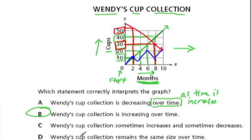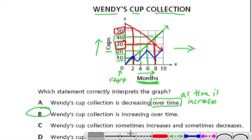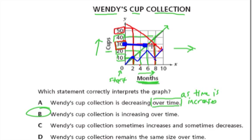And then D, the cup collection remains the same size over time. Well, whenever that is the case, especially when time is on your x-axis here, a constant, it'll be unchanged. It'll be some kind of horizontal line.